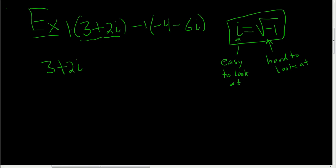Then here there's really a minus 1, so we do have to distribute the negative 1. So let's see. Negative 1 times negative 4 is 4. And then negative 1 times negative 6i is positive 6i. Okay, looks okay.